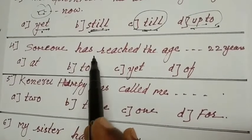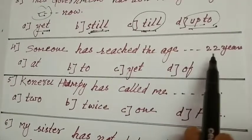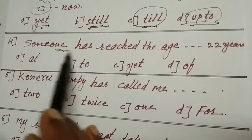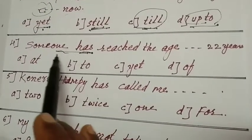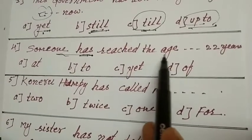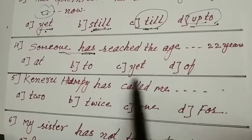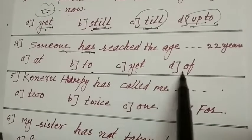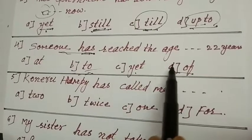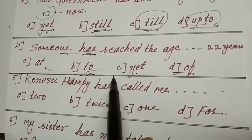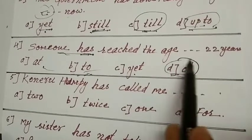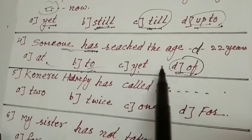Someone has reached the age dash 22 years. Someone, it is one person. Someone has reached the age at 22 years, that is wrong. That is why what should you write? Age of. D is your answer, age of.